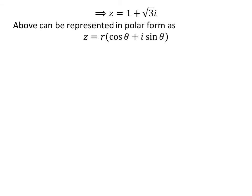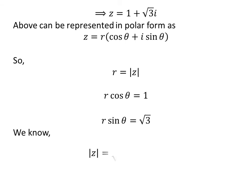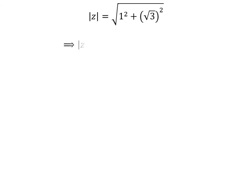The complex number Z can be represented in polar form as r times cosine of theta plus iota times sine of theta. Here, r is equal to modulus of Z, and r times cosine of theta is equal to 1 and r times sine of theta is equal to square root of 3. As per the definition, modulus of Z is equal to square root of square of 1 plus square of square root of 3, which gives modulus of Z equal to 2, which equals r.